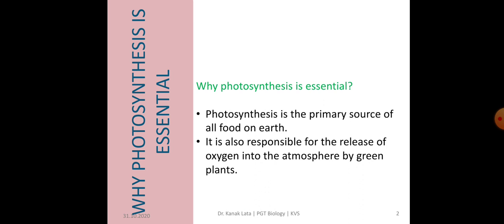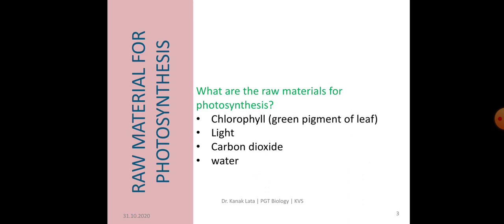Meanwhile, it is also responsible for the release of oxygen into the atmosphere. Now, let us know about the different raw materials of photosynthesis. Chlorophyll, that is green pigment, light, carbon dioxide and water are the important raw materials for the process of photosynthesis. If any one of these is absent, then the process of photosynthesis will not occur.